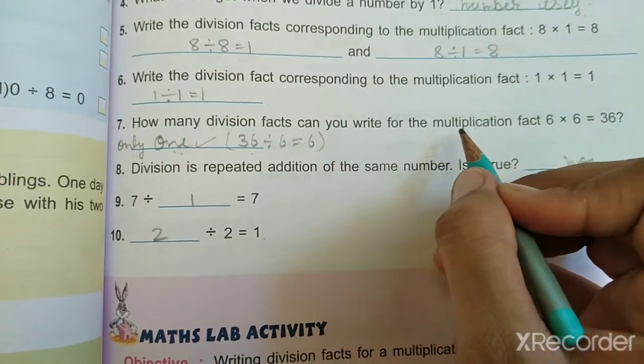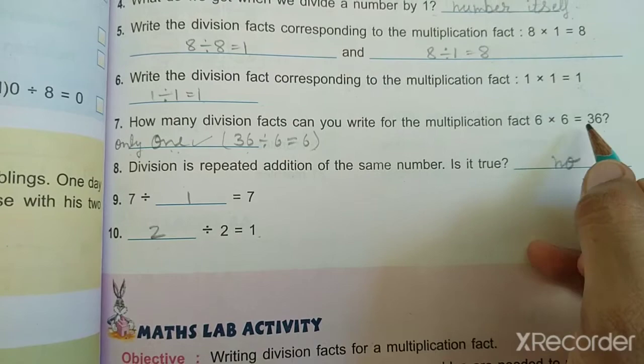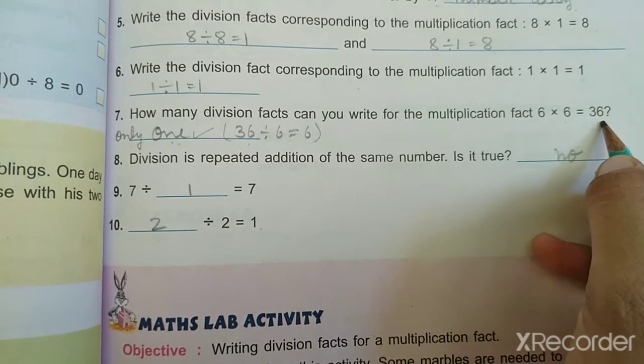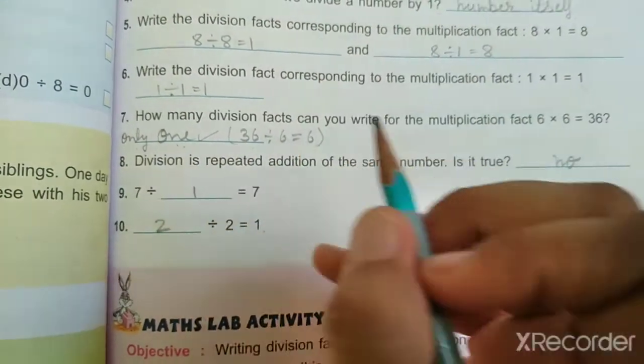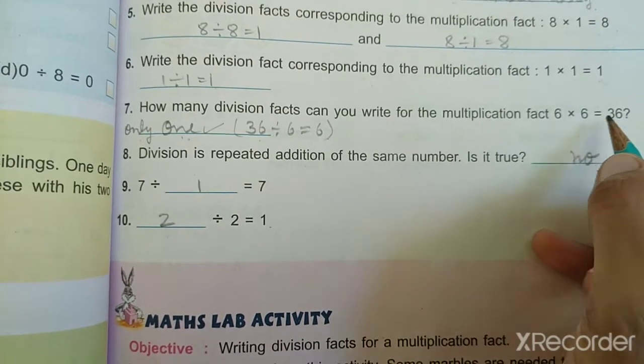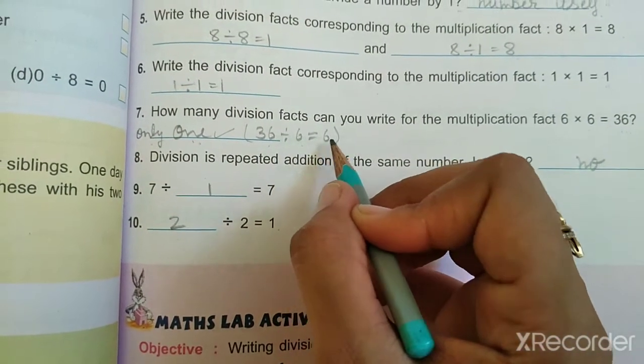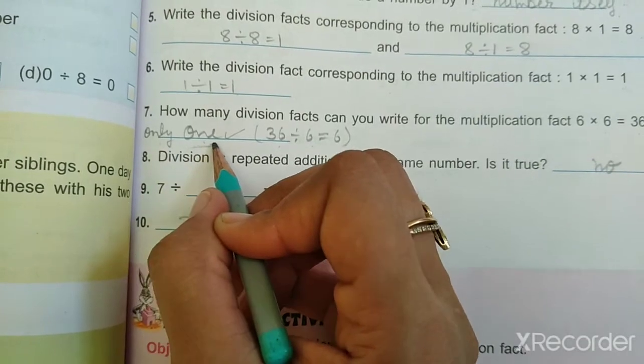How many division facts can you write for the multiplication fact: 6 multiplied by 6 is equal to 36? It's very easy, only one. We have only one division fact: 36 divided by 6 is equal to 6.